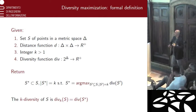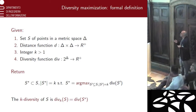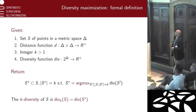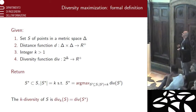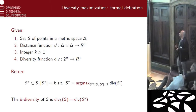Let's go towards a more formal definition of the problem. We have a metric space because we need some distance function, and we have a dataset S of points in this metric space. We have a distance function that maps every pair of points in the data space into positive reals, an integer k, and a specific diversity function, which is a property of a subset of the metric space. What we want to find is the subset of given cardinality k which maximizes the diversity over all subsets of that cardinality. The value of the optimal solution is called the k-diversity of the dataset, and the k-diversity improves as k grows.